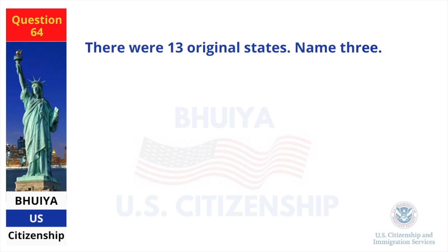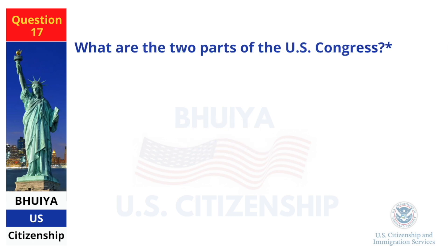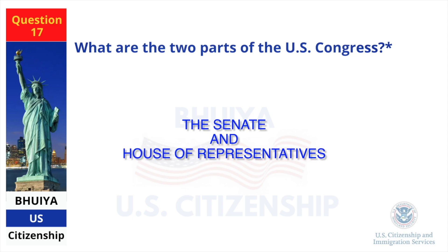What are the two parts of the U.S. Congress? There were 13 original states — name three. New York, New Jersey, Pennsylvania. What are the two parts of the U.S. Congress? The Senate and House of Representatives.